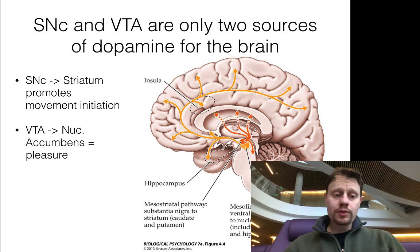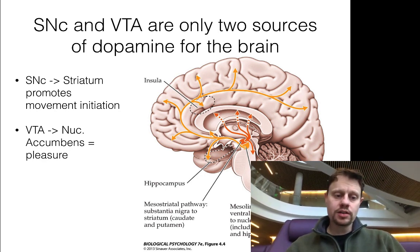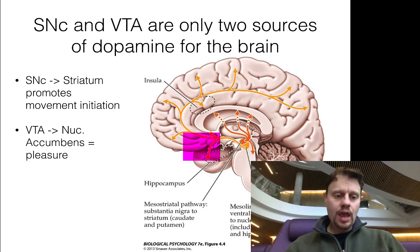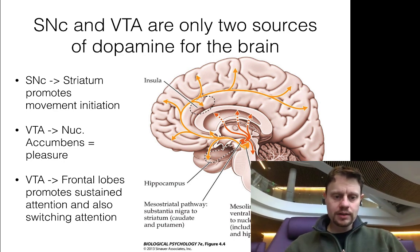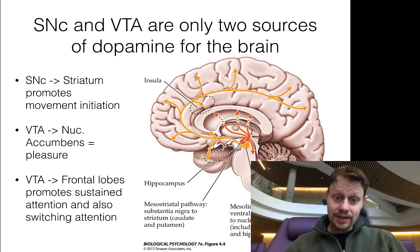We also mentioned briefly — although it won't be something you need to know on the exam for this unit, just be aware of its existence — the ventral tegmental area makes one projection to the nucleus accumbens, which promotes feelings of pleasure. The rest of the projections from the ventral tegmental area go throughout the cortex, including the frontal lobes.